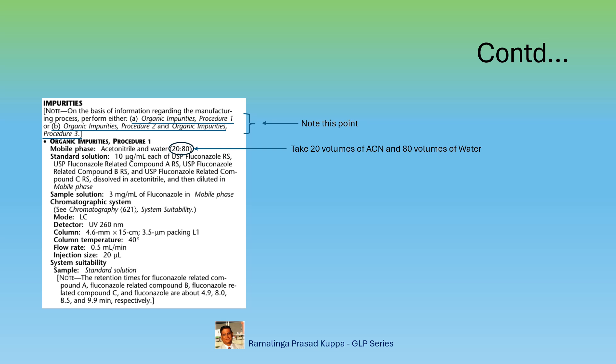You must take 20 volumes of acetonitrile and 80 volumes of water separately and mix them and not take 20 volumes of acetonitrile and make it up to 100 volumes with water. So, these two mixtures are not the same.